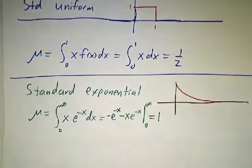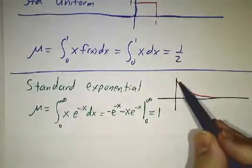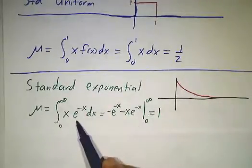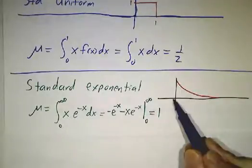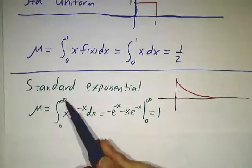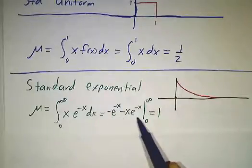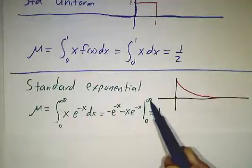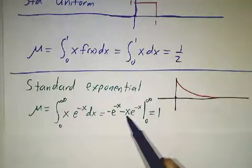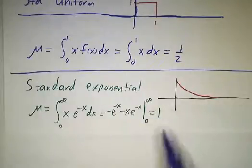For our exponential random variable, the function was e to the minus x. So we integrate x times e to the minus x dx from 0 to infinity. To do this, you have to integrate by parts — you often have to integrate by parts when you do probability. Plugging in at infinity really means taking a limit as you approach infinity, and you need L'Hôpital's rule for that. At the end of the day, you just get the number 1.